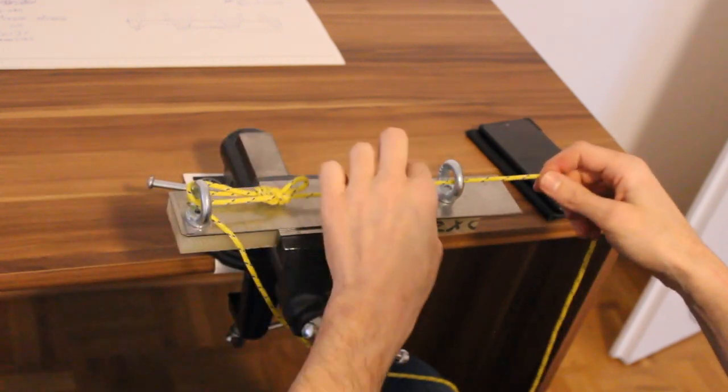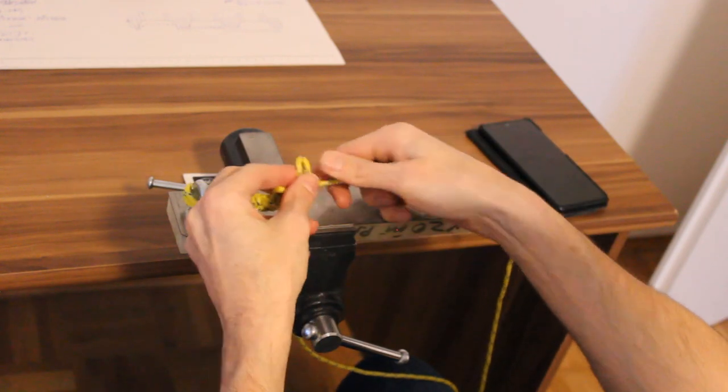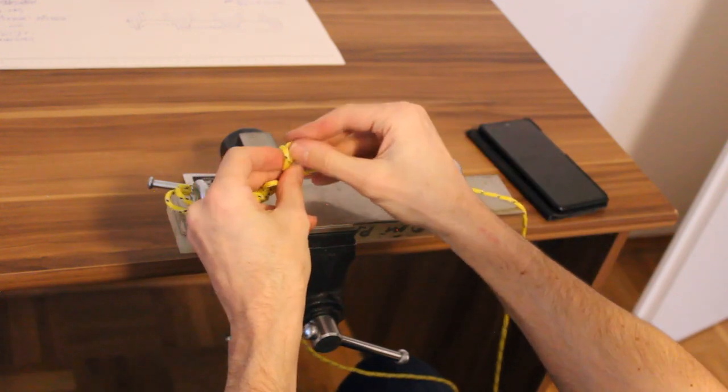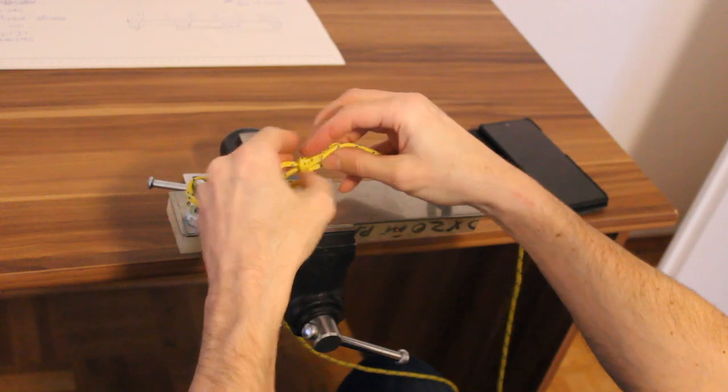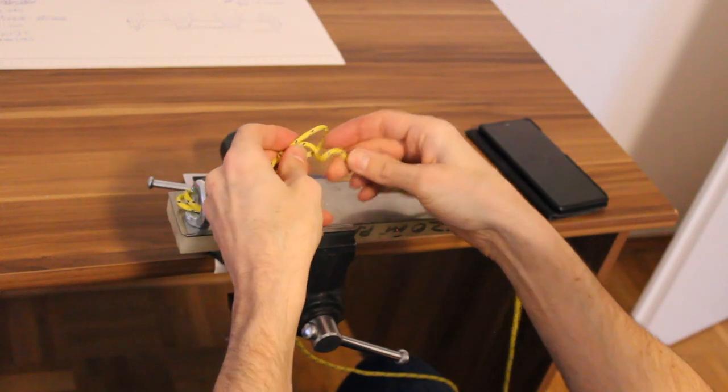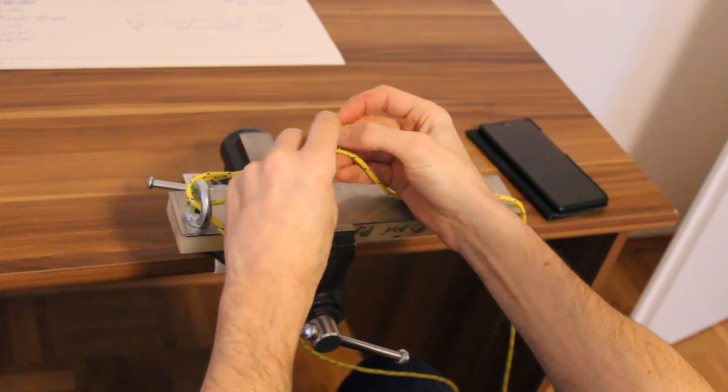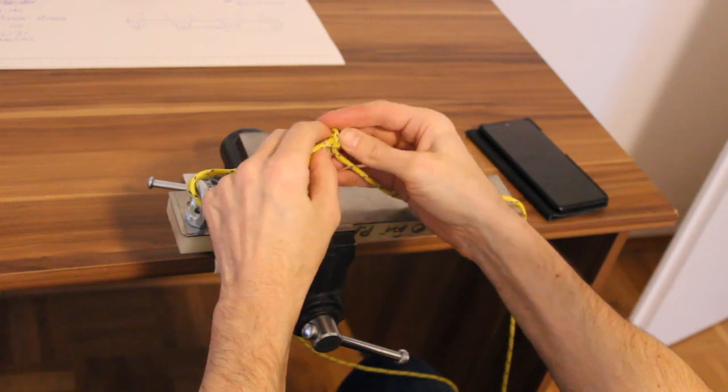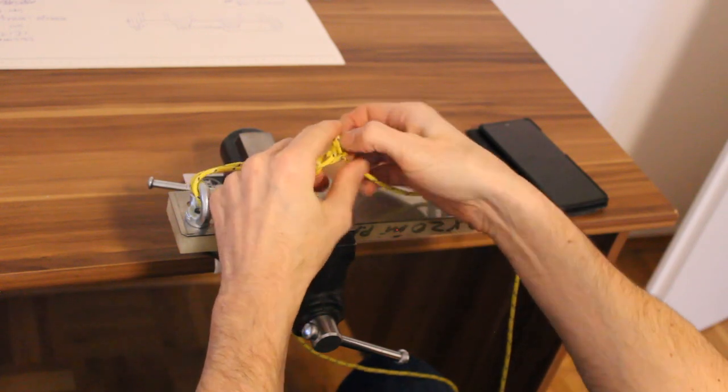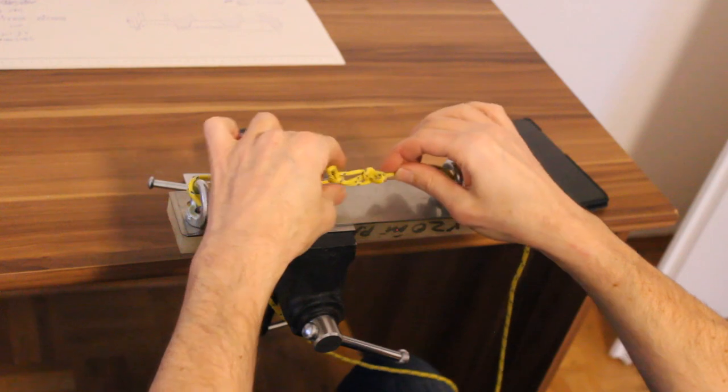Let's say you also want to tighten down a load or something on the other end, so you make a sheep shank or some other way of getting a loop in your rope. There you go, there's a little sheep shank.